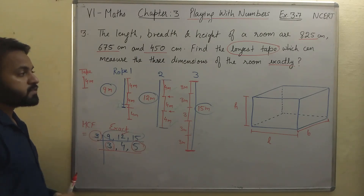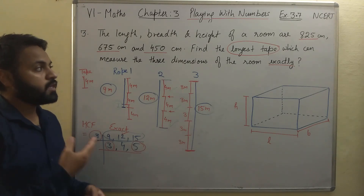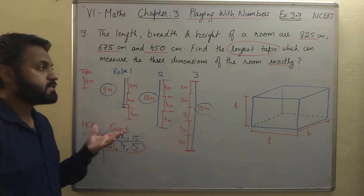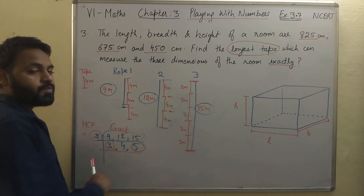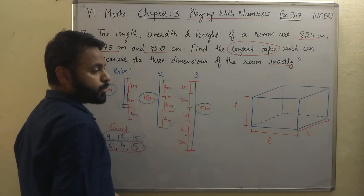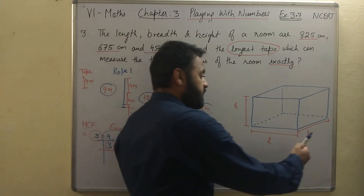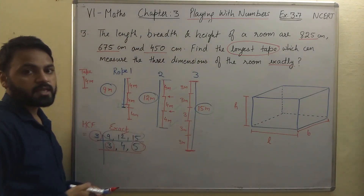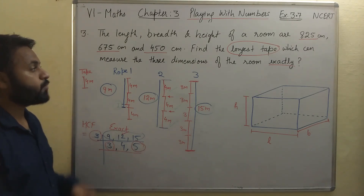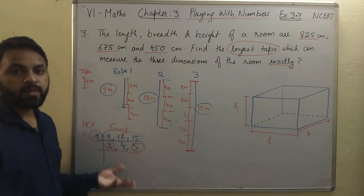Even if you find difficulty understanding, look for the word 'longest' in the question. Whenever the question says longest, highest, or greatest value, we need to find HCF. And whenever it asks for minimum, least, or lowest values, we have to find LCM. Many students who sent assignments found LCM instead of HCF. That is why I am explaining in detail so you always know when to find LCM and when to find HCF. In this question, we were given length, breadth, and height of a room — a cuboid shape — and we need the longest tape that measures all three dimensions exactly, so we find HCF.